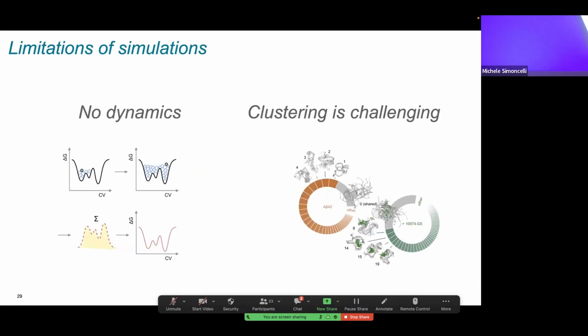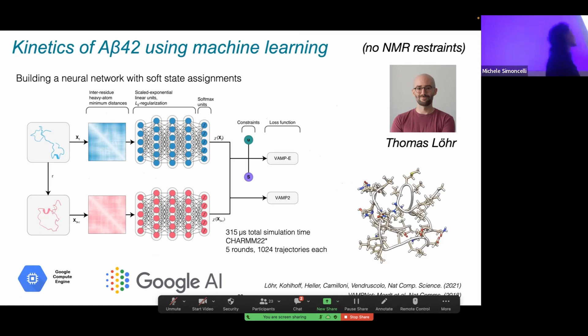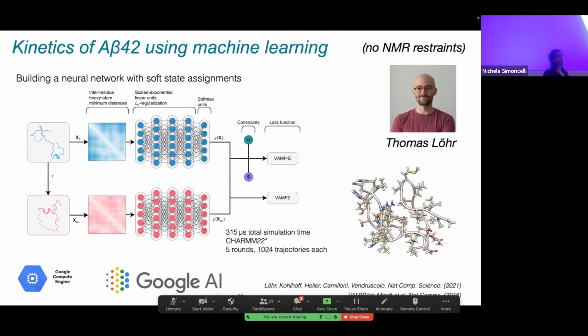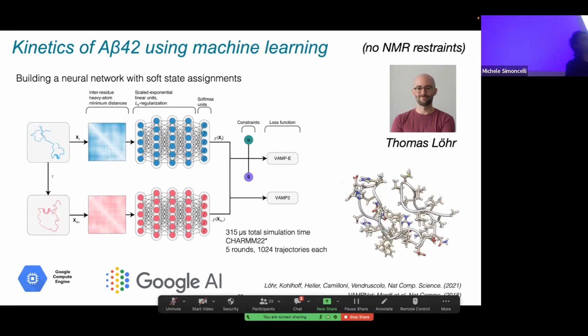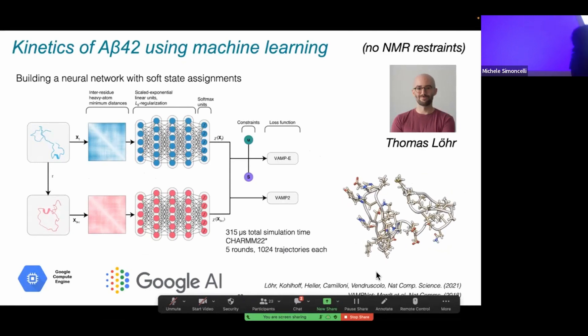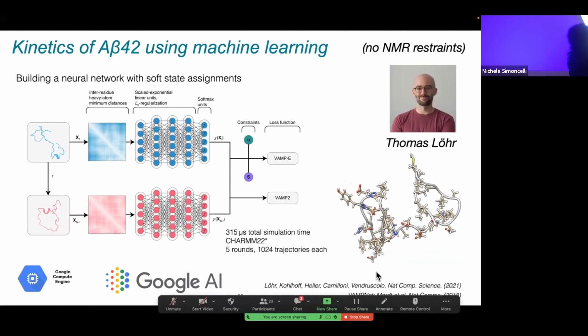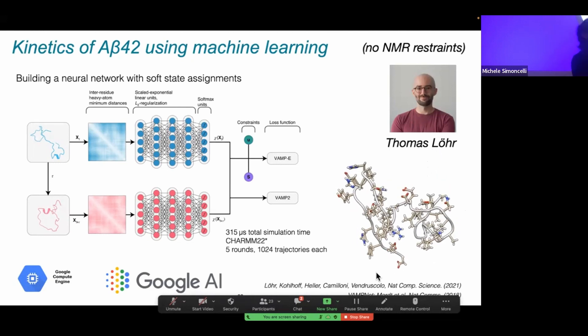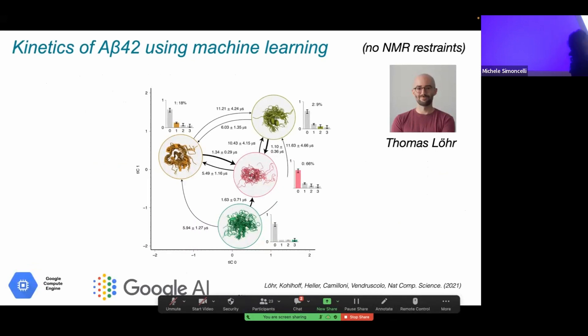But there were two limitations with this approach. One is that we lose the dynamic information by using metadynamics and also figuring out how to cluster this protein. While Lennard-Jones interaction maps in the end proved very useful, it was very difficult to figure that out. That was probably the 11th way I tried to cluster the different states. In collaboration with Google AI, this is the work of Thomas Lohr, we were able to run very long vanilla molecular dynamic simulations totaling in 315 microseconds of total simulation time to build a neural network in such a way such that we could group our different states of our disordered protein using essentially a soft state assignment approach. By using the dimension of time, we could build a Markov state model. We use time to separate out different conformations.